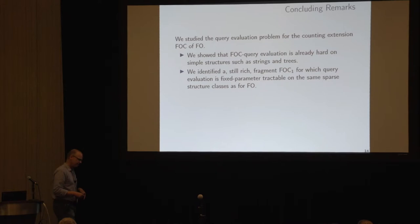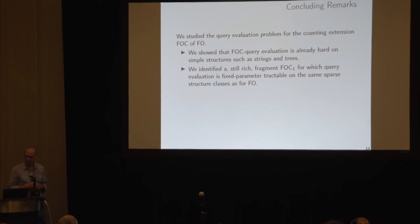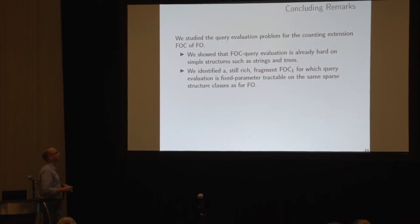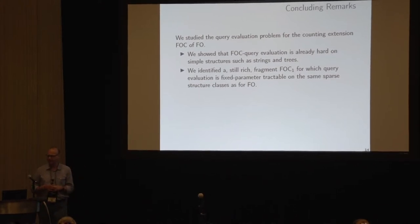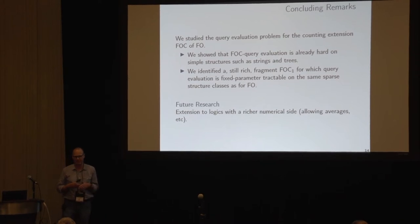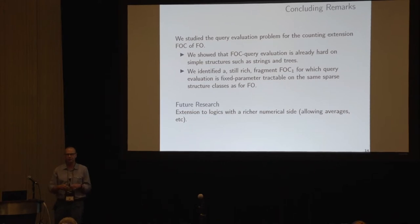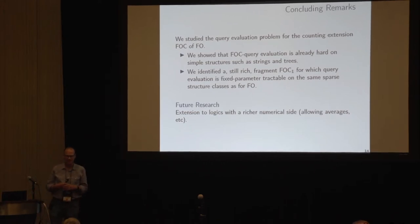So we have two results: a lower bound result — simple, but good to know, showing hardness over trees — and we identified the fragment FOC1 and could extend the results from first-order query evaluation to it. One thing we want to look at next is extending the logic with richer numerical predicates, for example averages, or more generally terms going into the reals or into some vector space, which would be interesting in many situations.